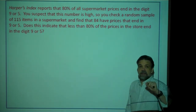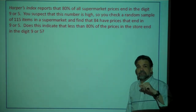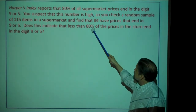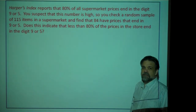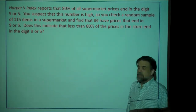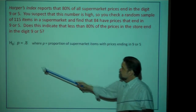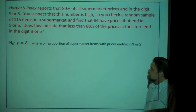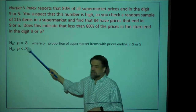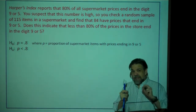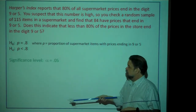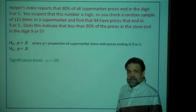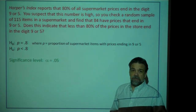Let's define our hypotheses. Sometimes it's easier to start with the alternative hypothesis because it's staring us in the face: less than 80%. So our alternative hypothesis is P is less than 0.8. That means our null hypothesis is P equals 0.8, where P is the proportion of supermarket items with prices ending in 9 or 5. And technically at this point you should choose your alpha — let's say alpha is 5%. That's an extremely common choice for alpha.